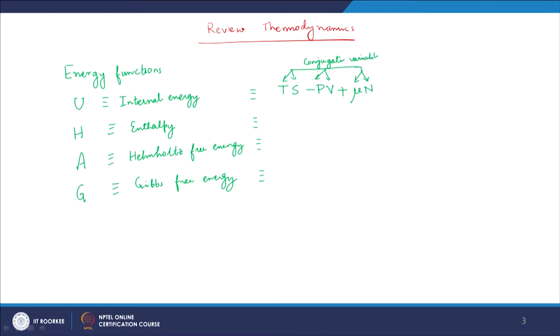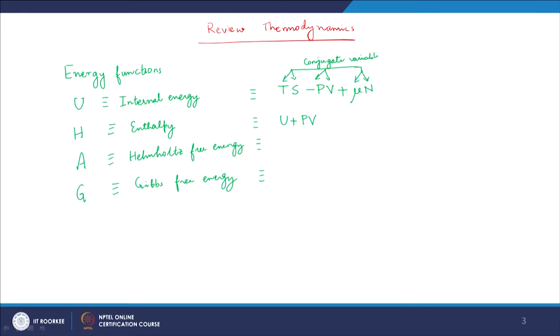T is conjugate to S, P is conjugate to V. From this, enthalpy H is defined as U plus PV, which equals TS plus µN. Helmholtz free energy A is defined as U minus TS, which equals minus PV plus µN. Gibbs free energy G is H minus TS, which simply equals µN. It helps to remember these four relations starting from the expression for U.